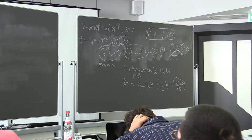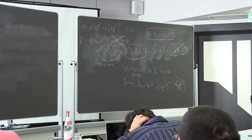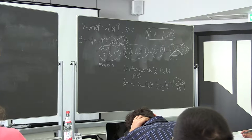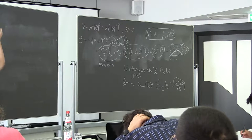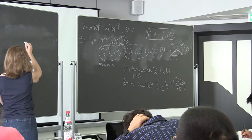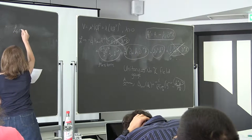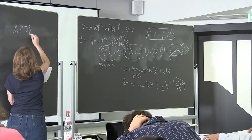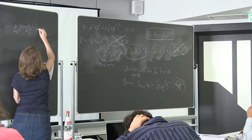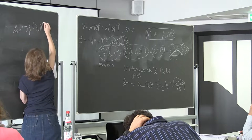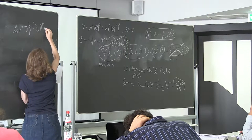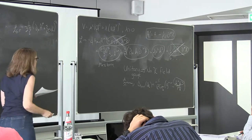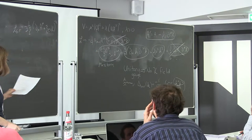In the R_ξ gauges, the χ field has mass m_χ² = ξ M_A². The gauge-fixing interaction is −1/(2ξ) (∂_μ A^μ + ξ e v χ)². I'm adding this gauge-fixing term to fix my gauge.